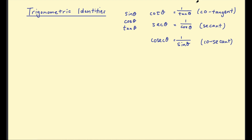In this video I'll be looking at some more trigonometric identities. In the first part we looked at sine, cosine and tan, and today I'm also going to be looking at cot, sec and cosec — standing for cotangent, secant and cosecant.